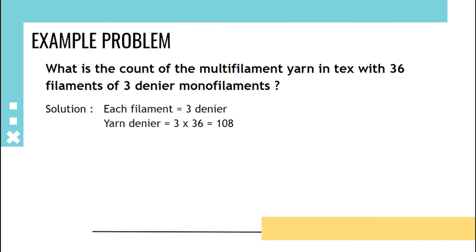will be 3 × 36 = 108 Denier. To convert it to Tex, Denier has to be divided by 9, so 108 ÷ 9 = 12 Tex.